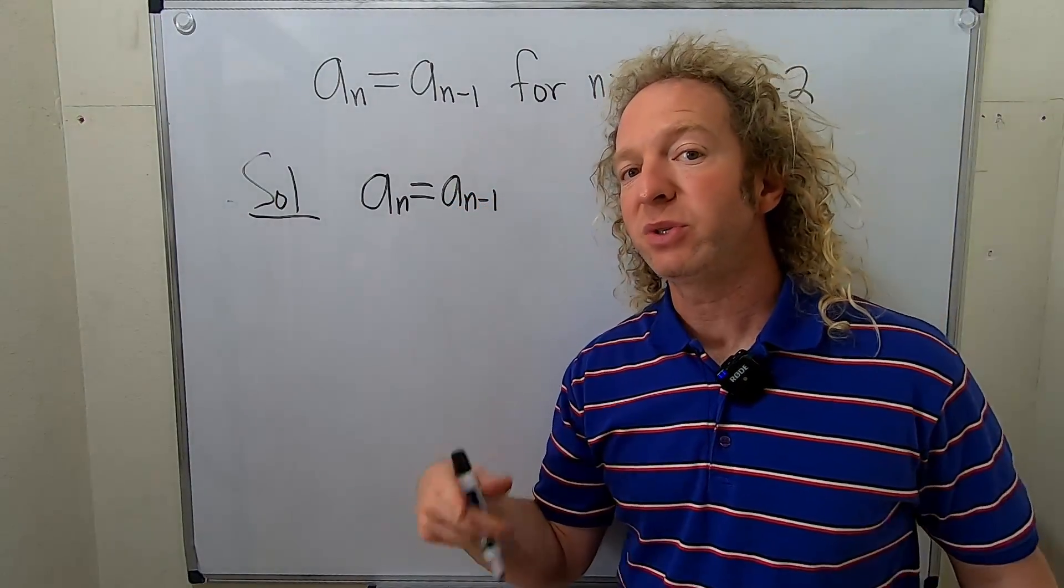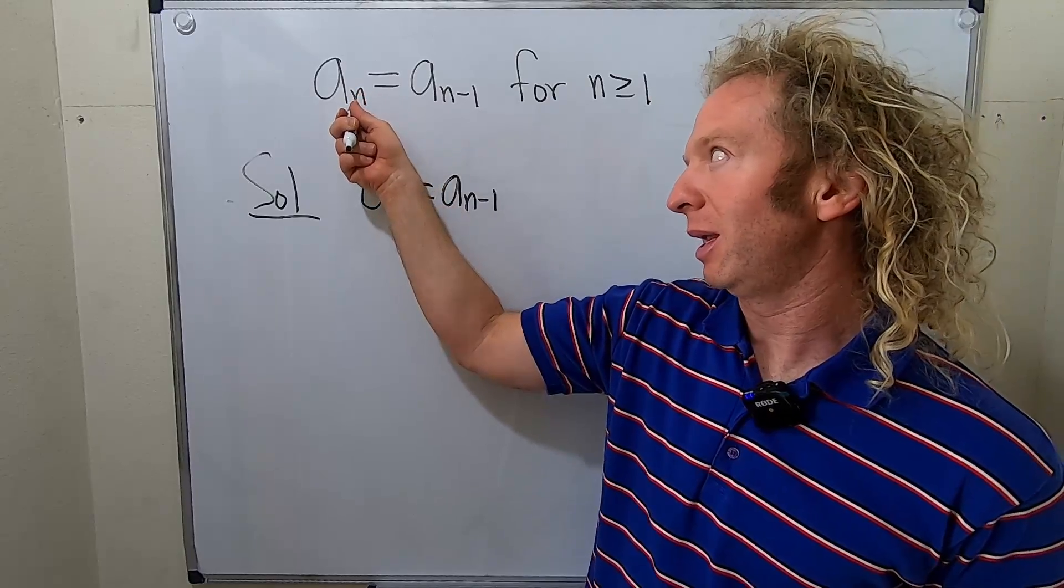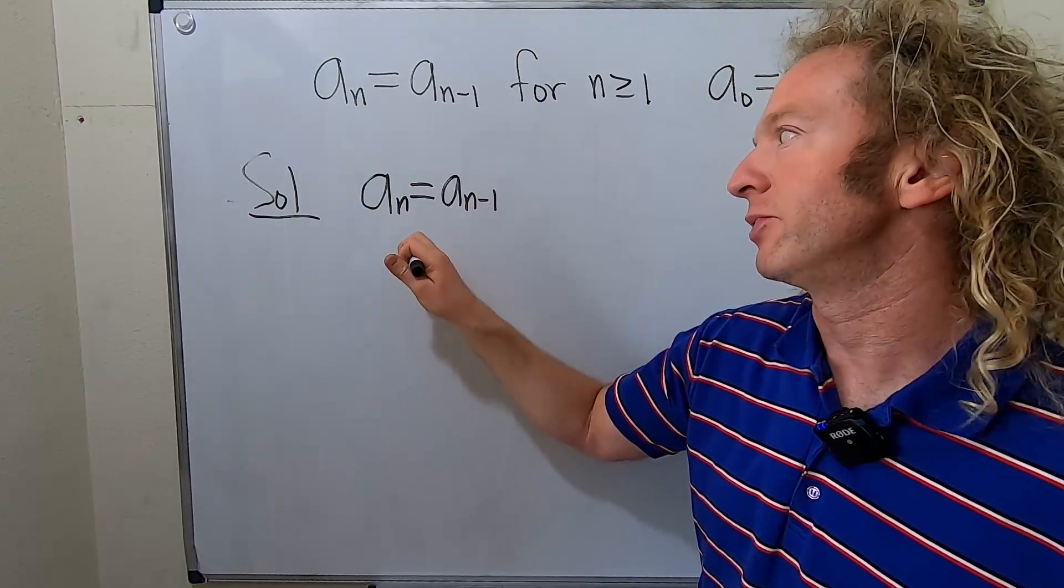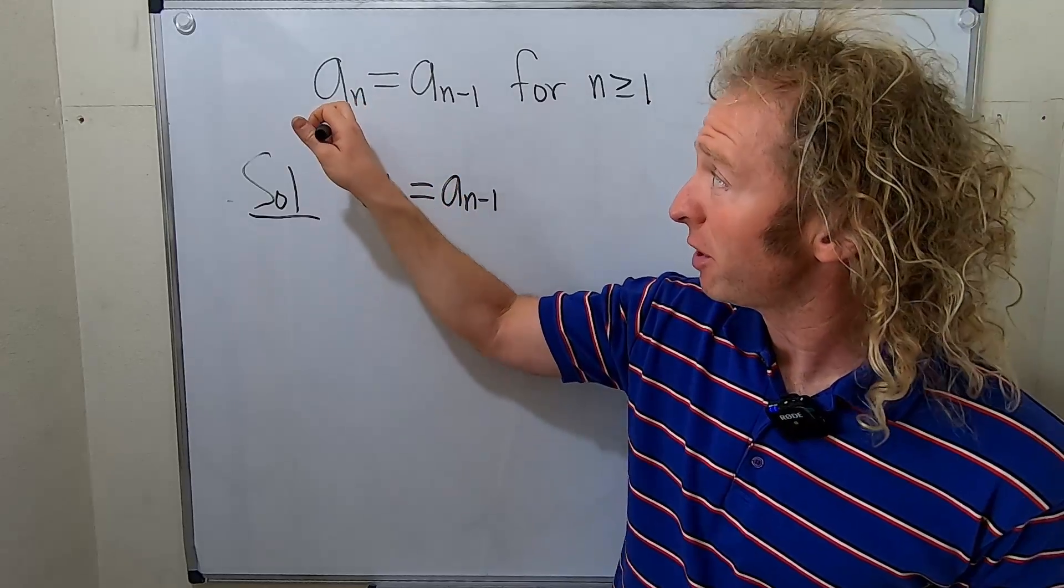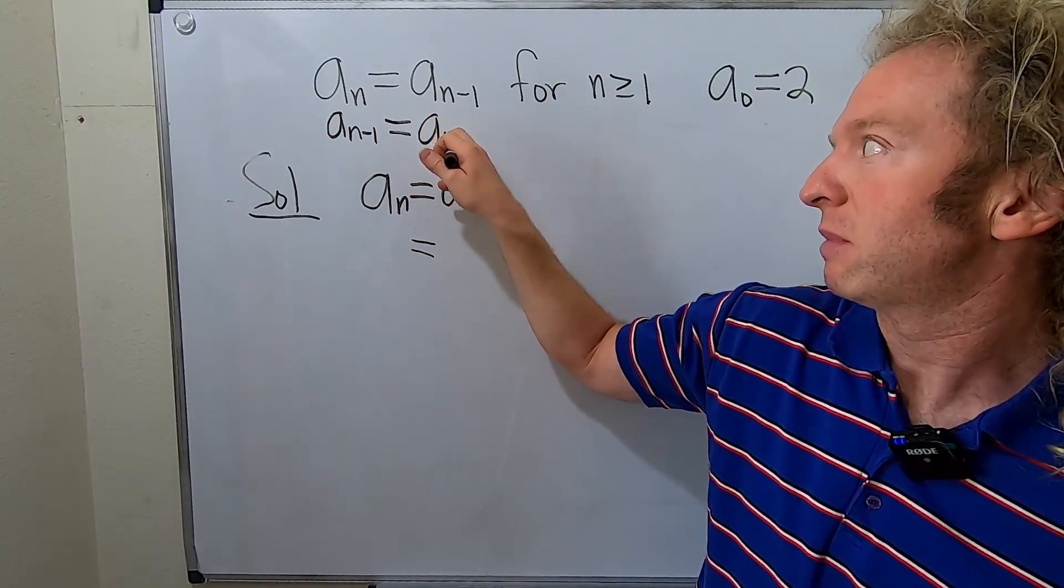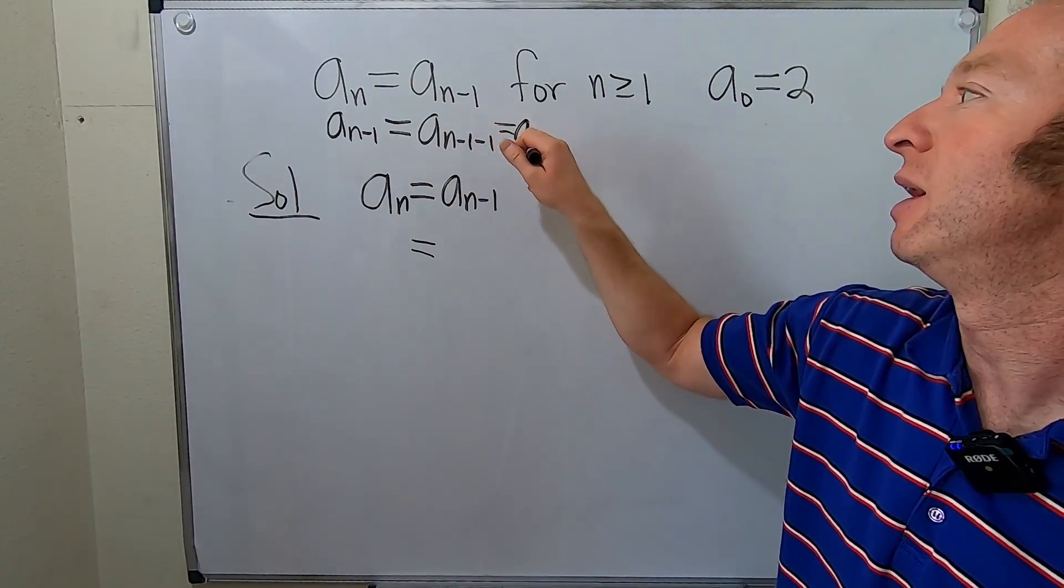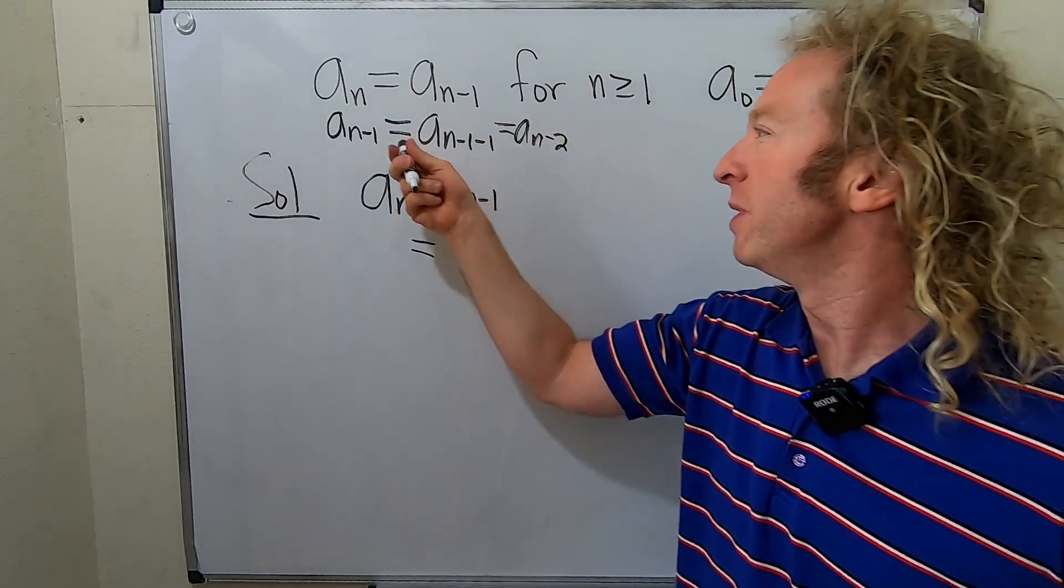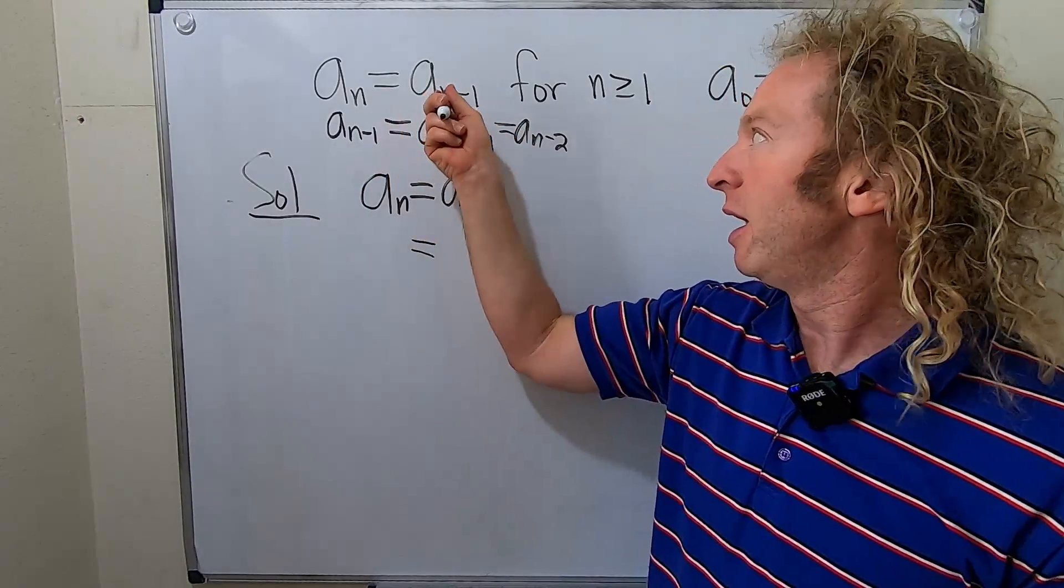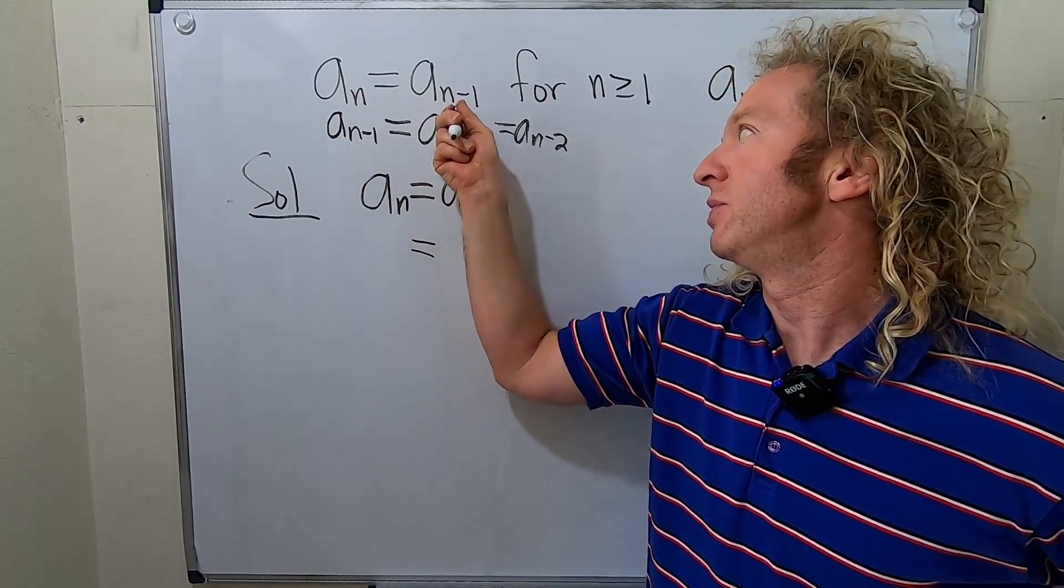Now we have to use it again. We go back up here and replace the n with n minus one. So I'm going to do it here so you see it. A sub n minus one equals a sub n minus one minus one, which is a sub n minus two. So it's the first piece. You can do it in your head - n minus one minus one is n minus two. But there you see it.